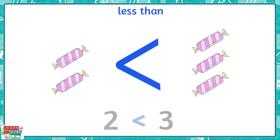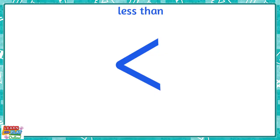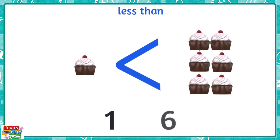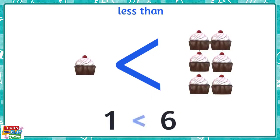If we were using cupcakes again and there was only one over here and six cupcakes over here, you can see that there are less cupcakes on this side. So this means that we say one is less than six.